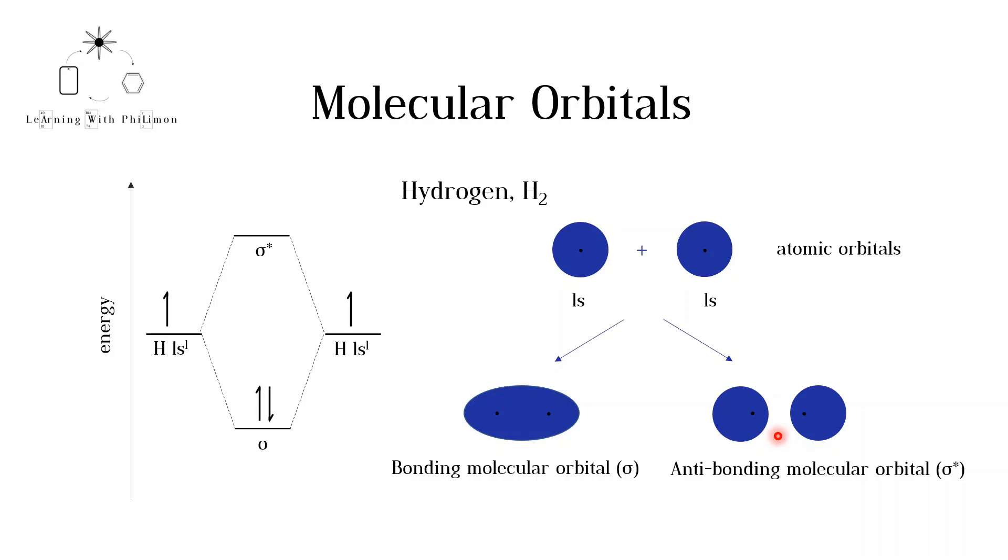When two hydrogen atoms bond, their electrons occupy the bonding molecular orbital. Remember that atoms bond to achieve a more energetically stable configuration. It would not be energetically favorable for the electrons to occupy the antibonding orbital.